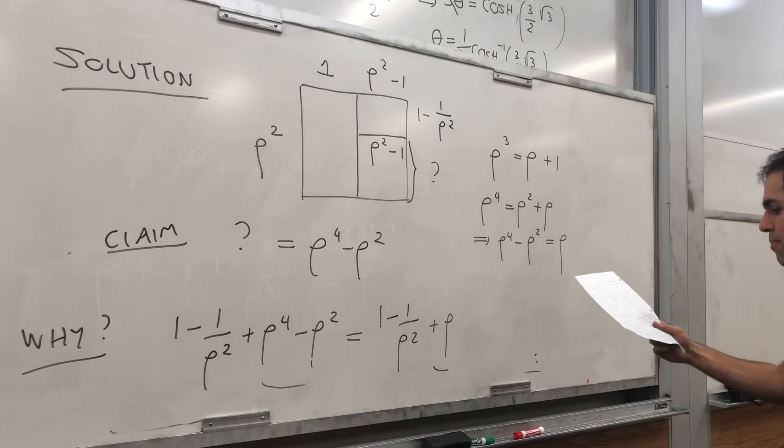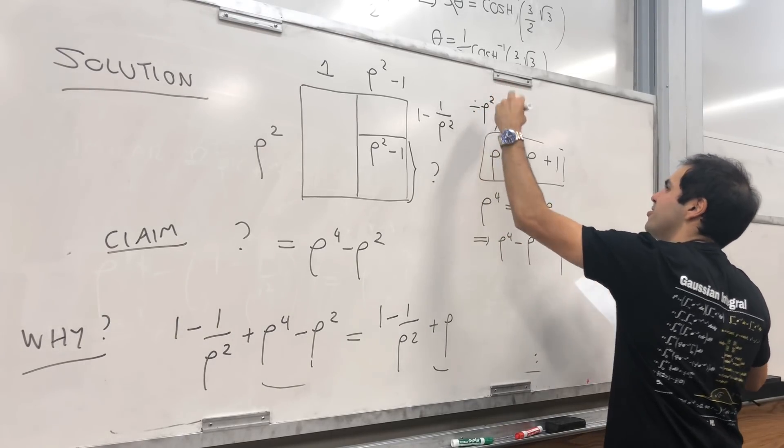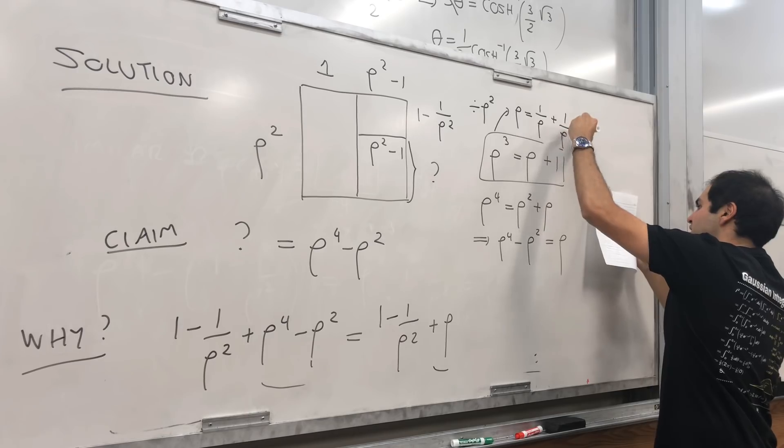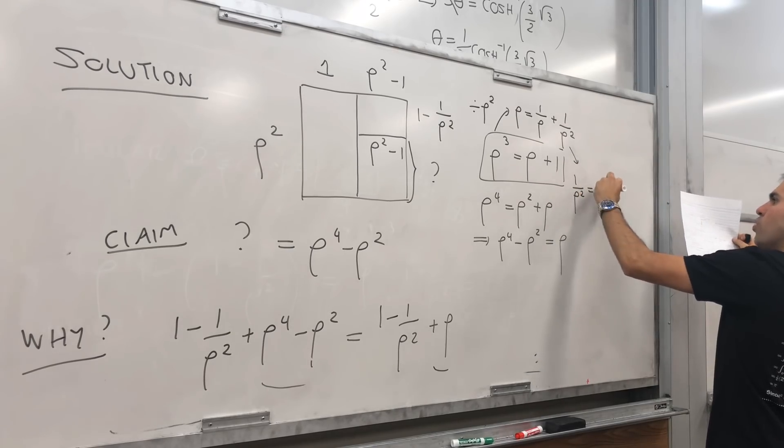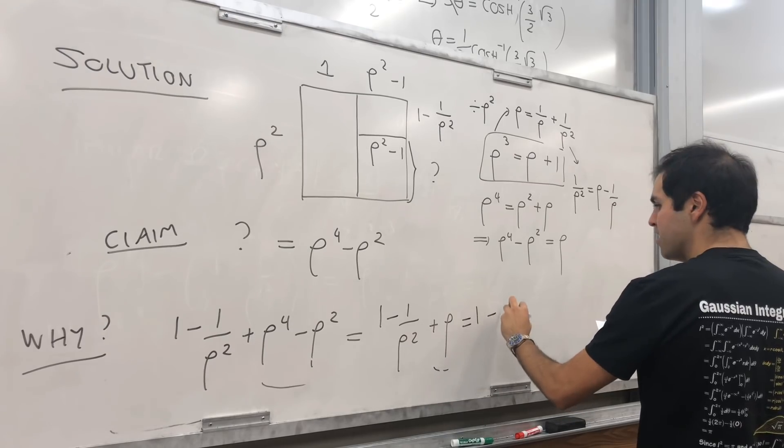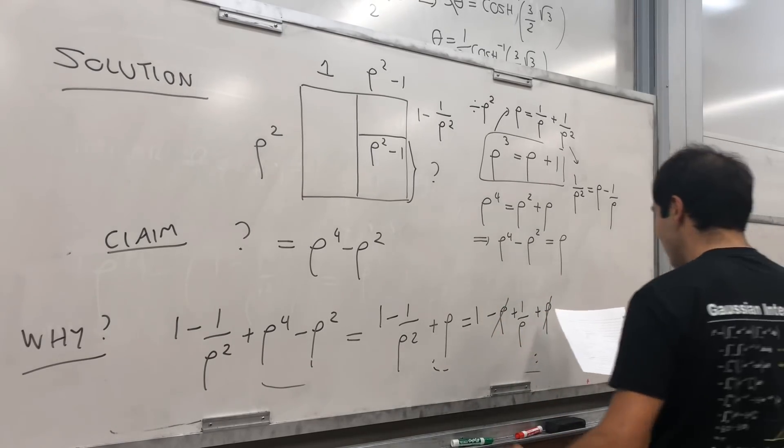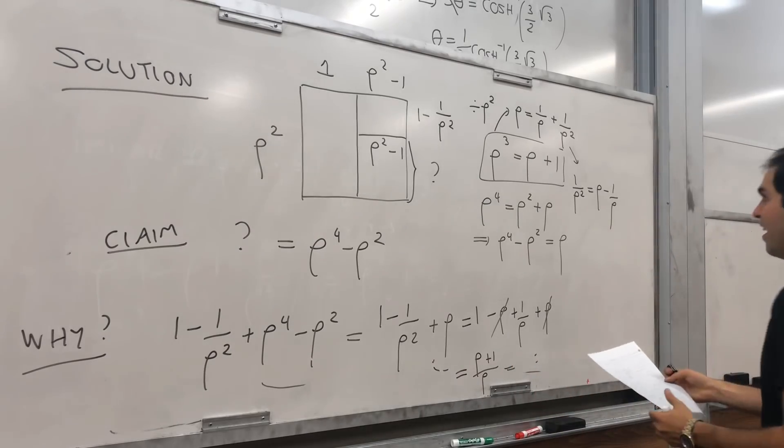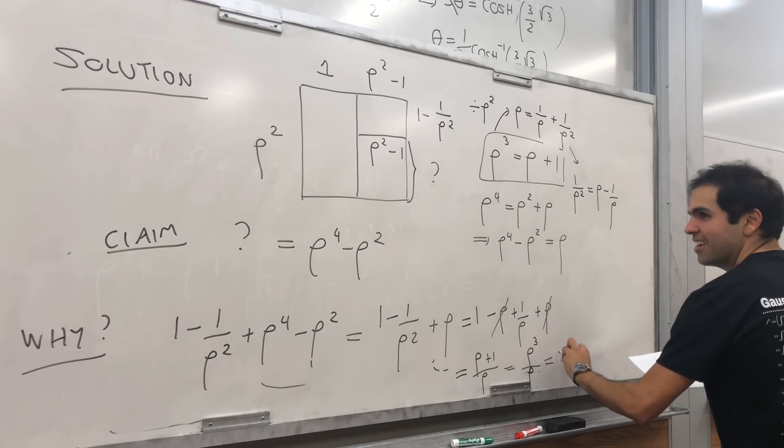And now we also want to simplify this a little bit. Let's take this equation and divide it by rho squared. So we get rho equals 1 over rho plus 1 over rho squared. And so 1 over rho squared equals rho minus 1 over rho. So this becomes, so minus 1 over rho squared, that becomes 1 minus rho plus 1 over rho. And we still have this plus rho. This cancels out. And we get 1 plus 1 over rho, which is rho plus 1 over rho. So and remember, rho plus 1 is rho cubed. So this becomes rho cubed over rho. Nice. That's what we get. We get rho squared.